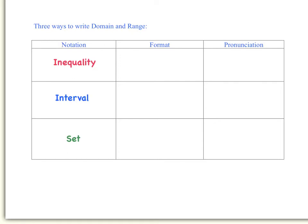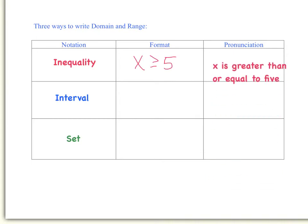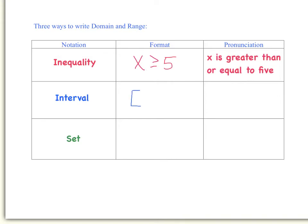Inequality notation is probably the notation you are most familiar with. In the previous example, I used inequality notation to write the domain and range of that circle graph. An example of inequality notation would be x is greater than or equal to 5, and you would pronounce it as 'x is greater than or equal to 5.'